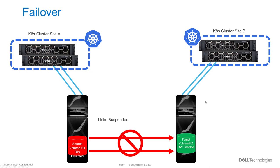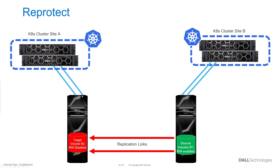It is up to the Kubernetes administrator to restart the stateful app from site B and make it available. Once the situation returns to normal and site A is back up, we re-protect the data, ensuring every new write from site B is also sent to site A. All these actions — failover, re-protect, failover again — can be triggered through the RepCTL utility in a simple or automated manner. Kubernetes administrators don't need to navigate UIs or dive deep into Dell technologies; they just kick off the commands and they're good to go.